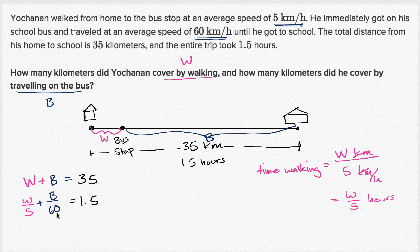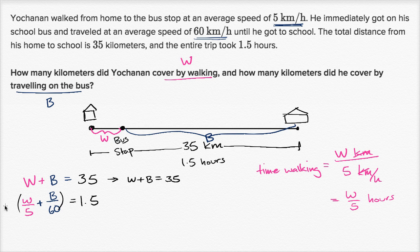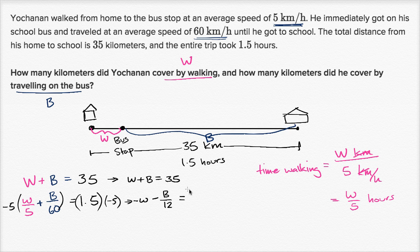Now we can solve this system of two linear equations with two unknowns. If I multiply the second equation by negative five, the W term becomes negative W, which will cancel with the W in the first equation. So the top equation is W plus B equals 35. Multiplying the second equation by negative five gives: negative W minus B over 12 equals negative 7.5.